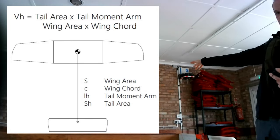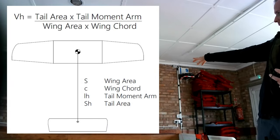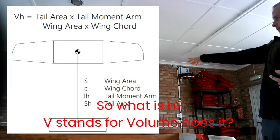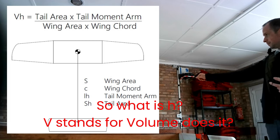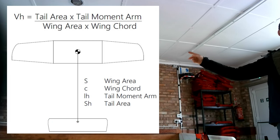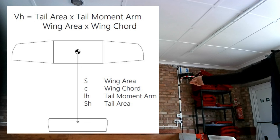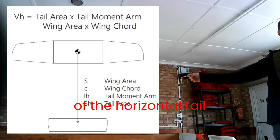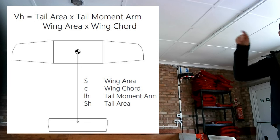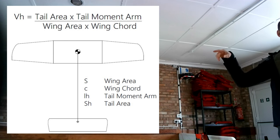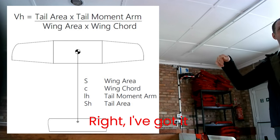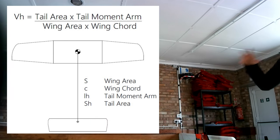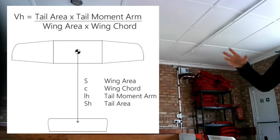That gives the volume of the horizontal tail, VH. The same approach applies to the fin — VV is the volume of the vertical tail — using the same idea but a different equation.